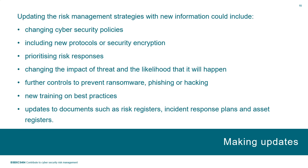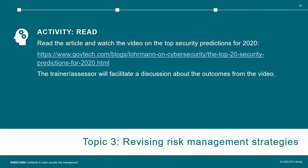What sort of updates could we be looking at? We could change our policies, introduce new protocols into the system, reprioritise what risks we're going to give critical response to, put in more controls, and always provide better training. We also need to make sure we get into the habit of keeping all our documents — such as our risk registers, response plans, and asset registers — up to date, because they're the documents that keep track of everything.